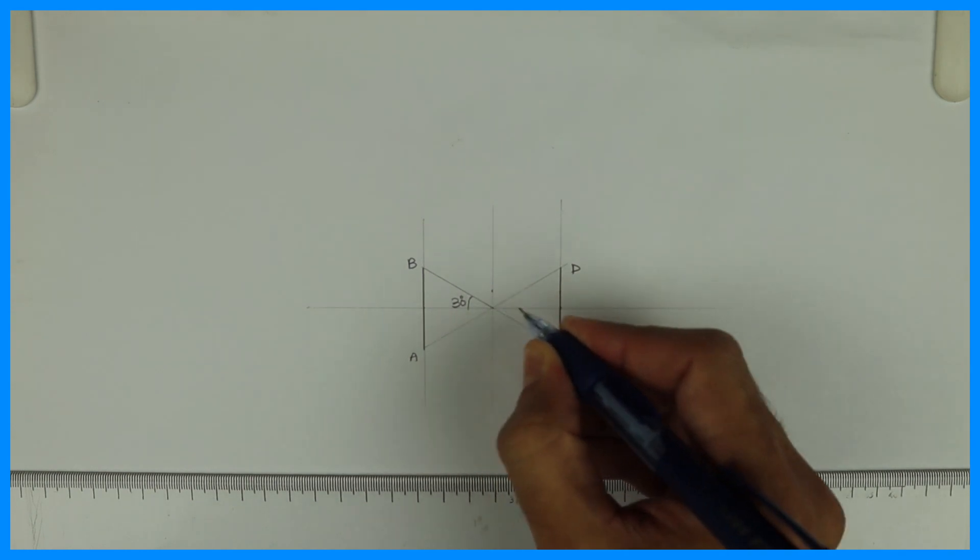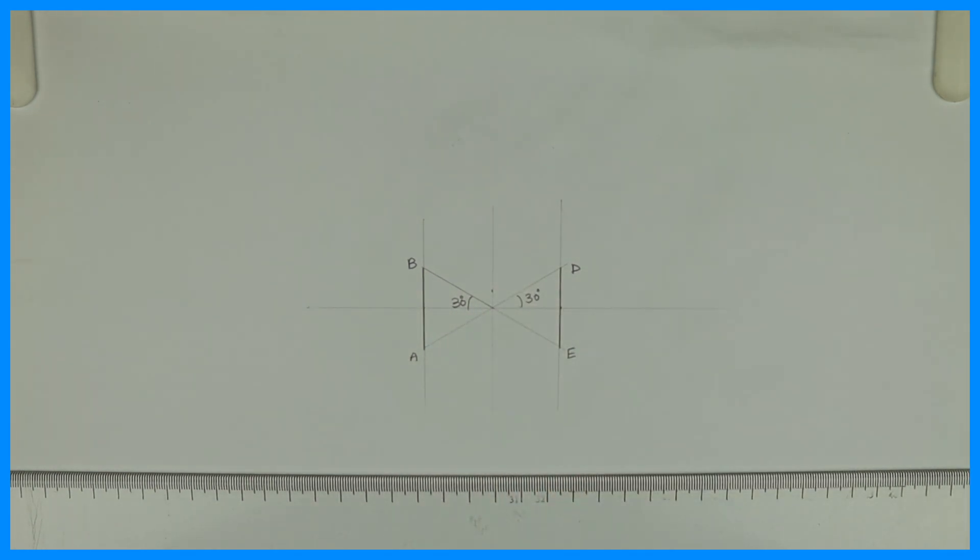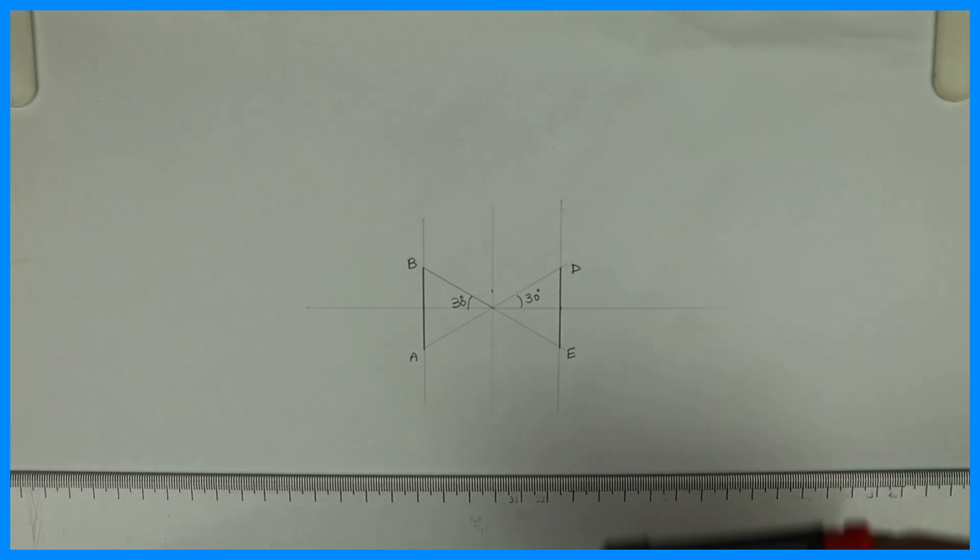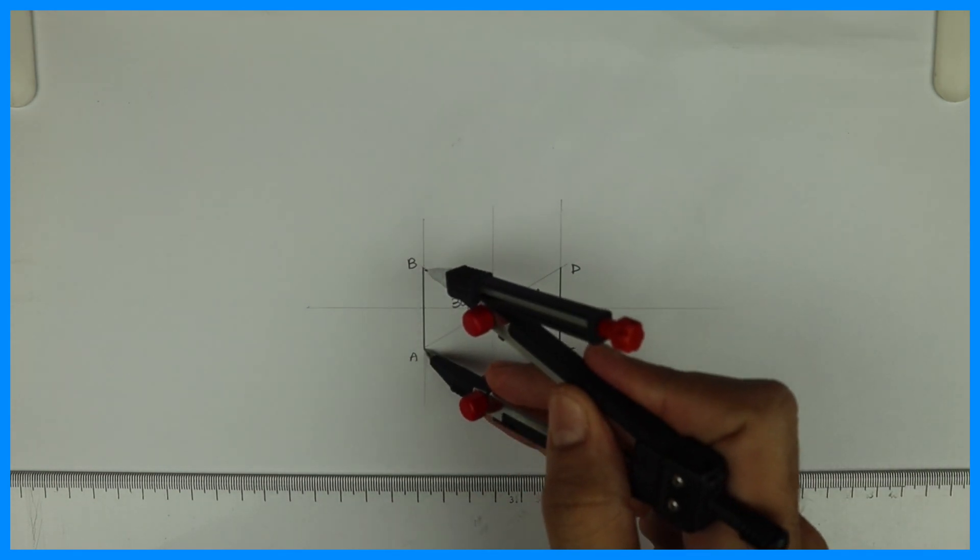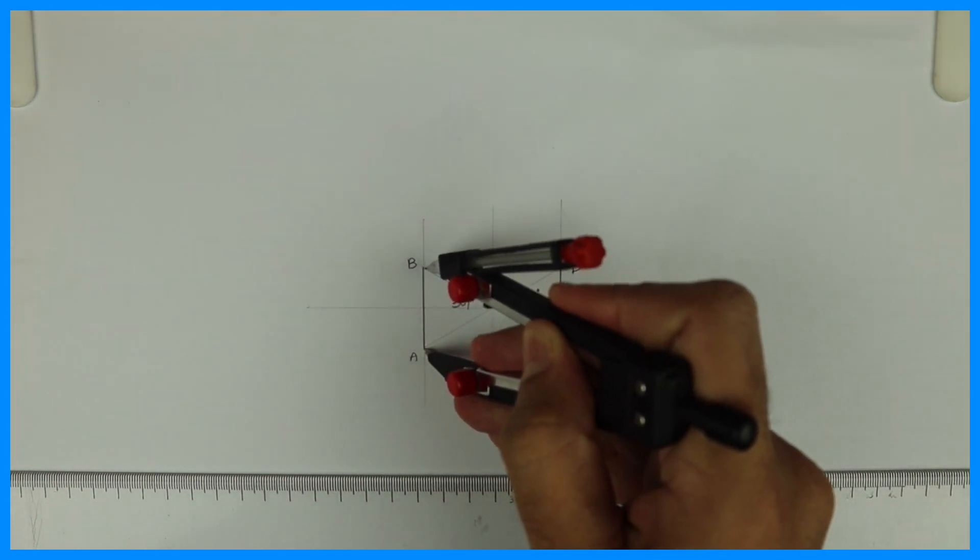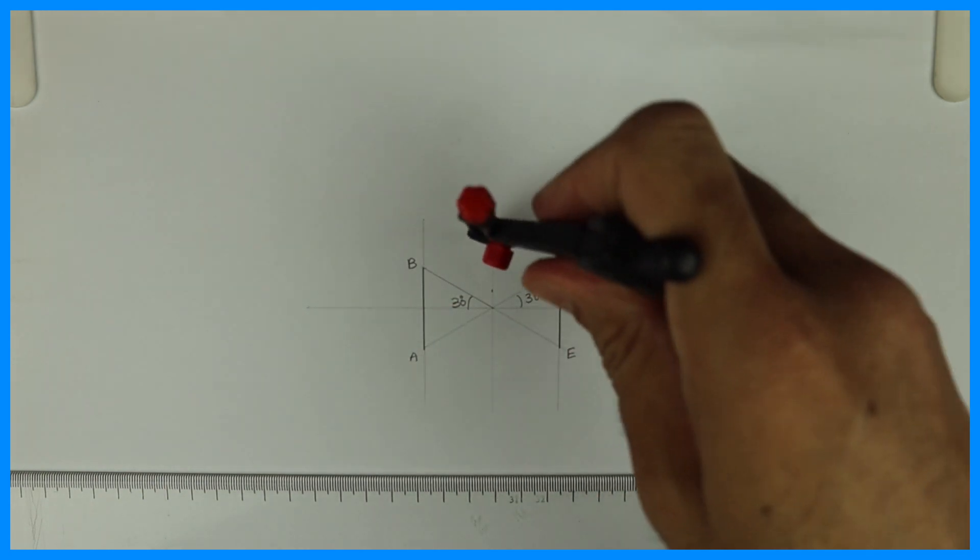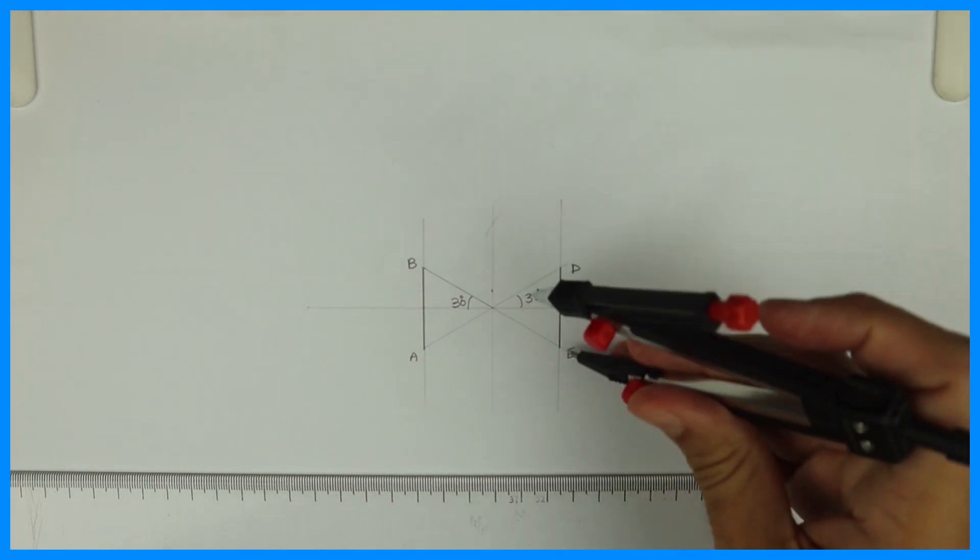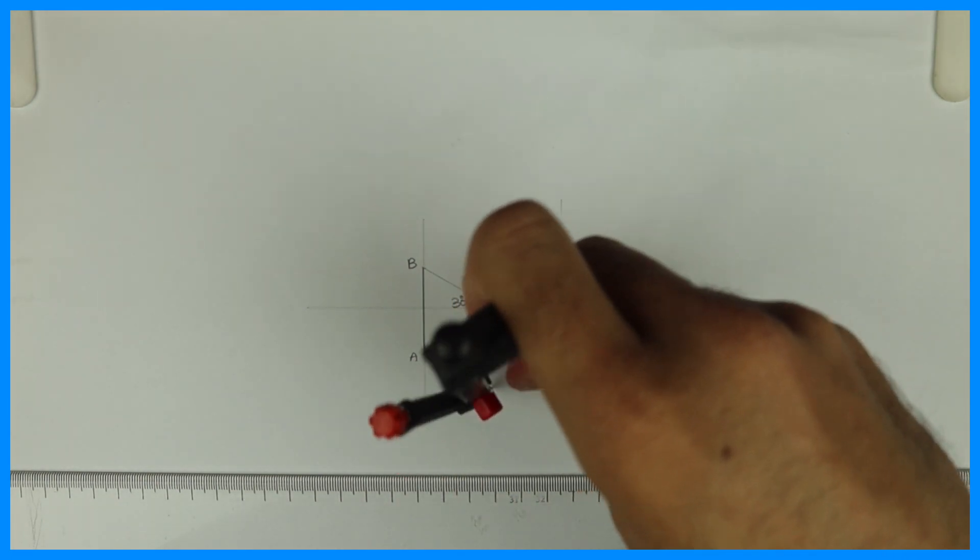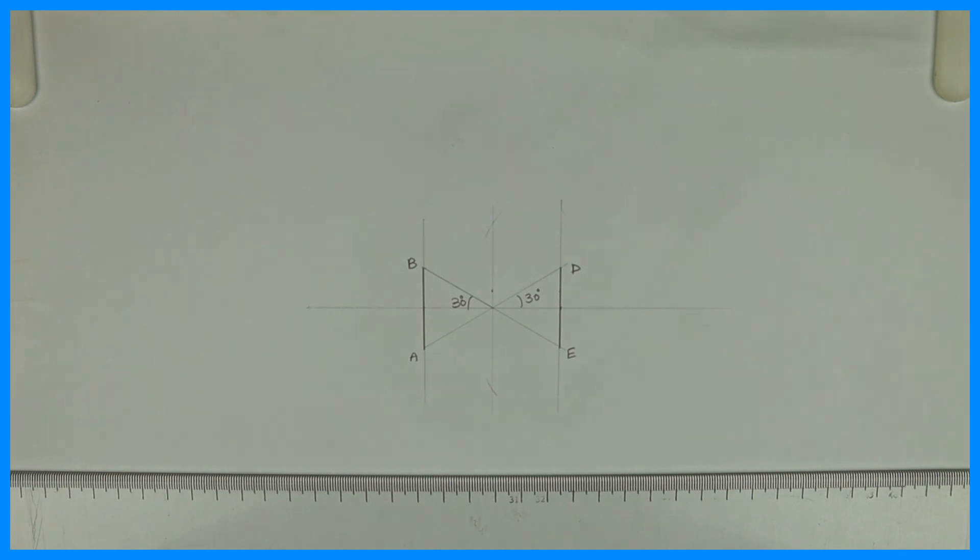This is 30 degrees, 30 degrees. After that, you take side AB in your compass and from D you can cut. From B also you can cut, it will be the same point. And from E you cut or from A.